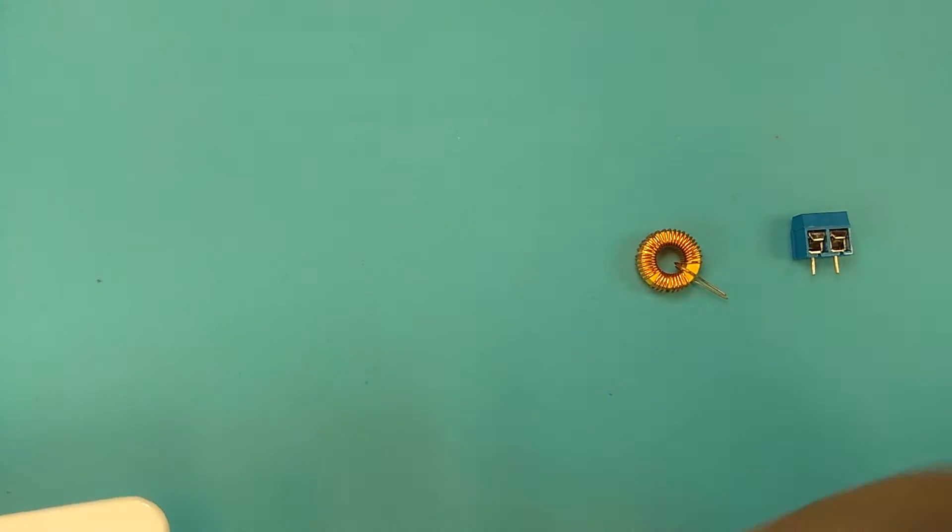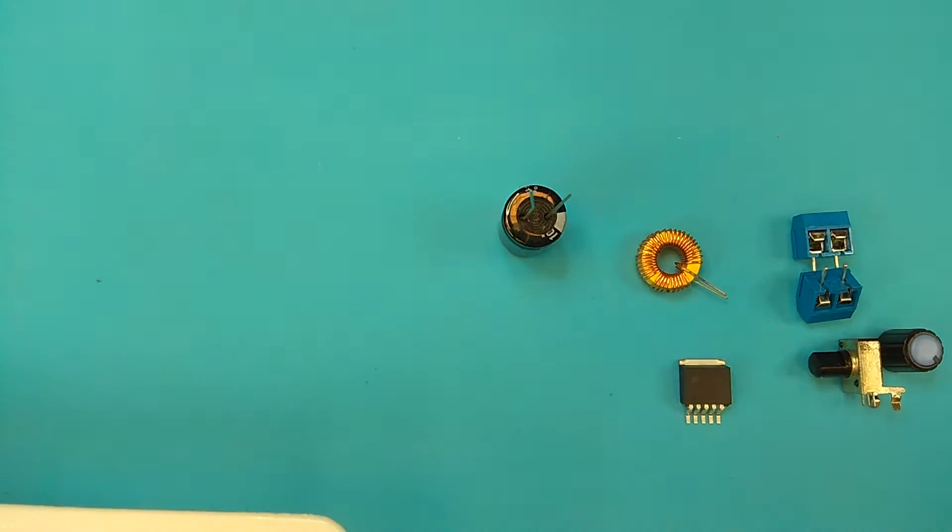Terminators for input and output. A small pot with a knob to set the output voltage. This is the IC itself, a switching power IC. Big capacitor for filtering the rectified AC current.